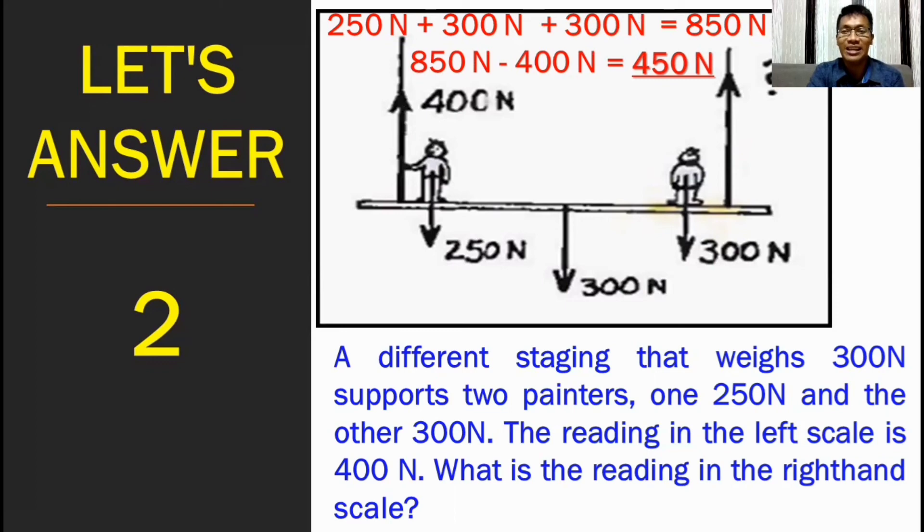Ibig sabihin, yung tension sa rope na ito ay 450 newton. So, with that, if we got tension that is equal to 850 newton and the weight, which is equal to 850 newton, opposite direction. So, therefore, it is balance. At, hindi mauhulog yung dalawang painters na nakatayo sa staging ito.